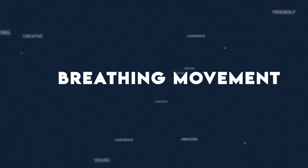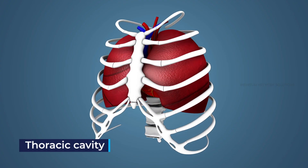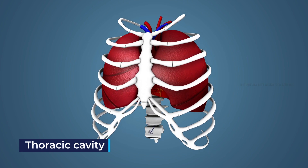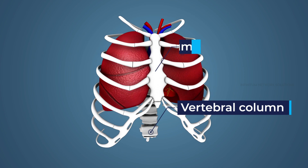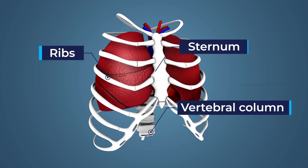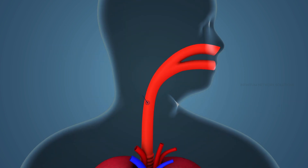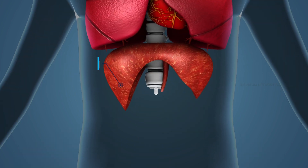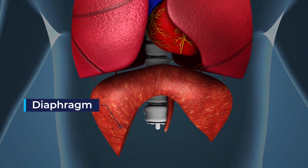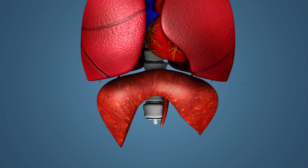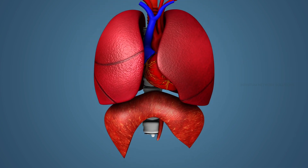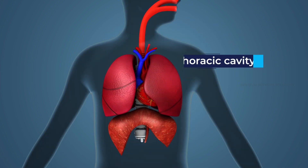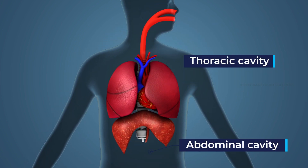Breathing movement. The thoracic cavity is an airtight chamber which is enclosed dorsally by the vertebral column, ventrally by the sternum, laterally by the ribs, anteriorly by the neck, and posteriorly by the diaphragm. The diaphragm is a dome-shaped partition of skeletal muscle in between the thoracic cavity and abdominal cavity.